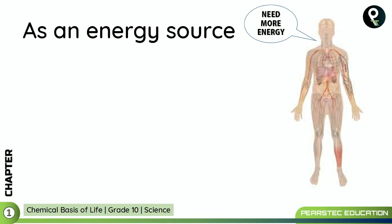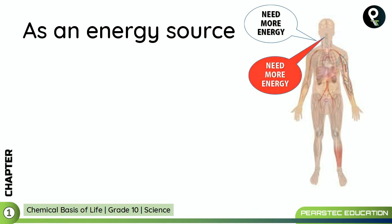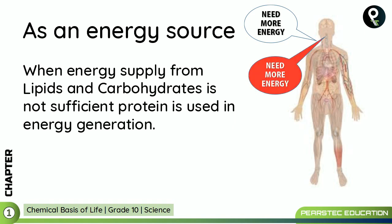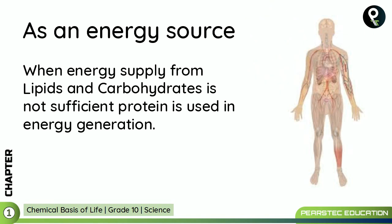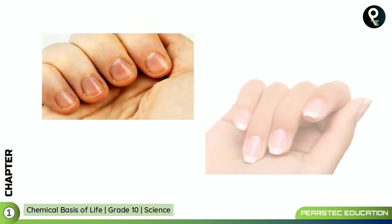When a person needs more energy, protein can work as an energy source. People usually use carbohydrates or lipids for energy, but when energy supply from lipids and carbohydrates is not sufficient, protein is used in energy generation. So when carbohydrates and lipids are not enough, protein steps in for energy generation — that is one significant role of protein.